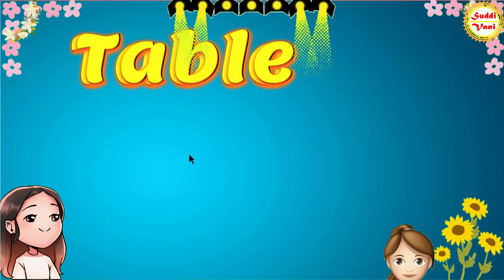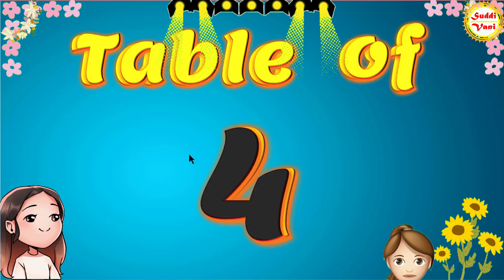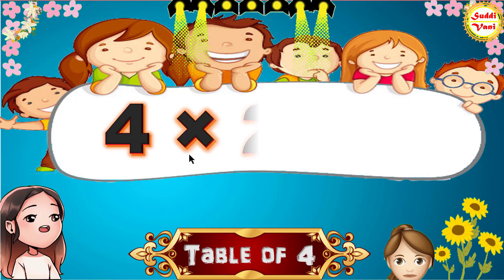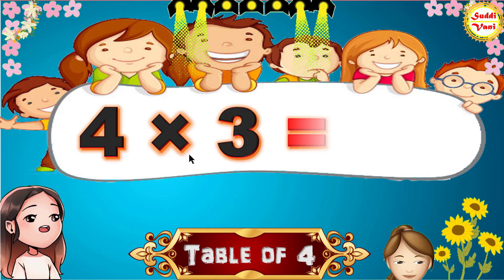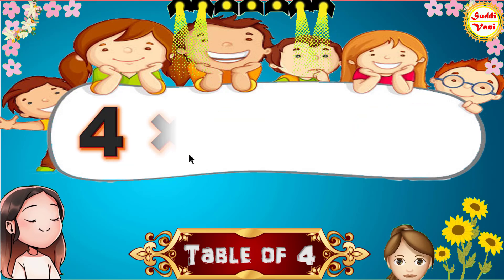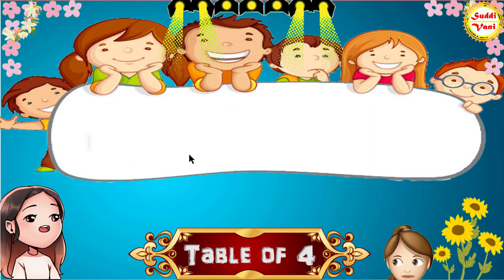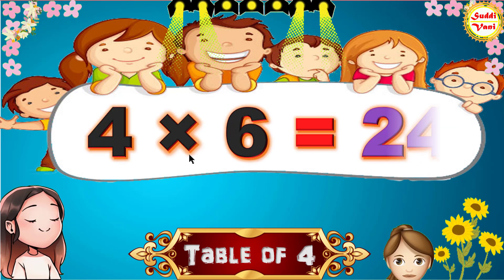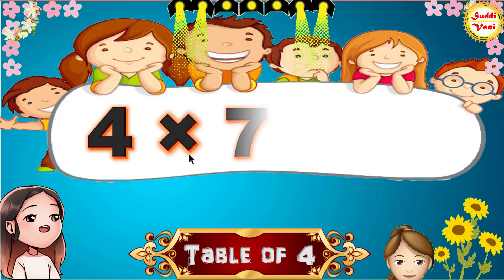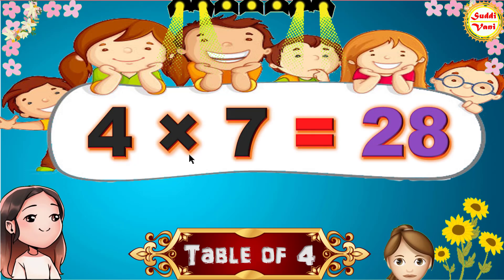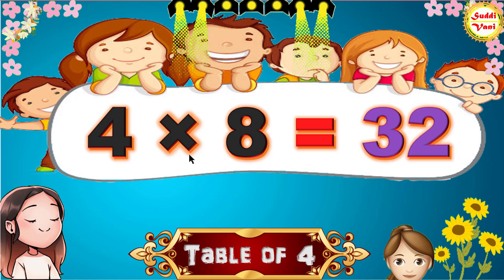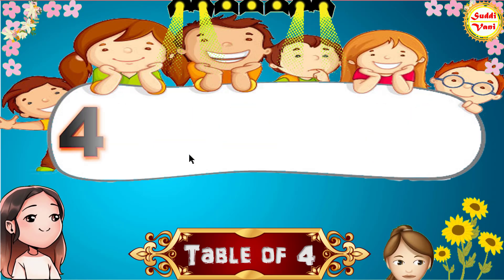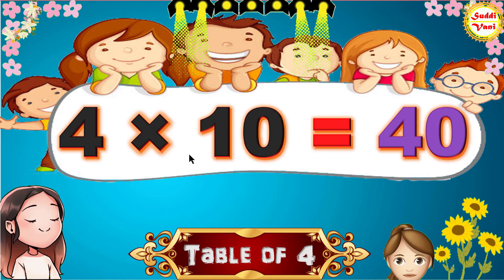Hello children, we will learn table of 4. 4 times 1 is 4, 4 times 2 is 8, 4 times 3 is 12, 4 times 4 is 16, 4 times 5 is 20, 4 times 6 is 24, 4 times 7 is 28, 4 times 8 is 32, 4 times 9 is 36, 4 times 10 is 40.